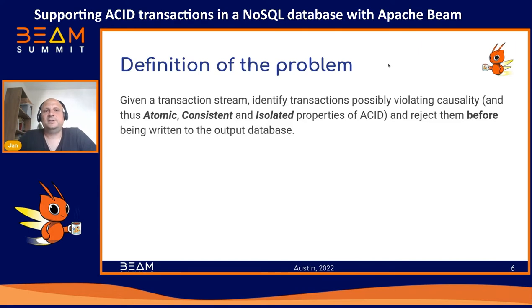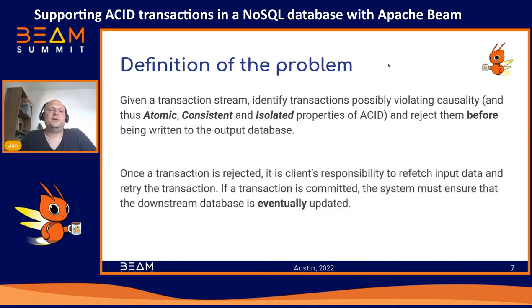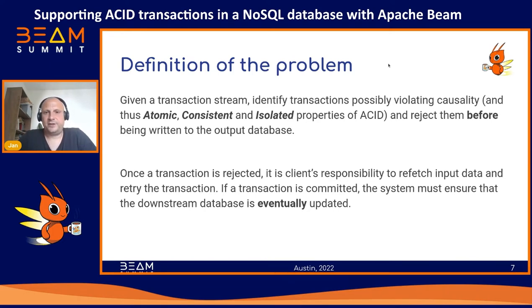So to rephrase that: given a transaction stream, identify transactions possibly violating causality and therefore ACID properties, and reject them before being written to the output database. We want to write a pipeline that will validate these properties. What we mean by transaction rejection is: we have a client that wants to write a transaction, and the Apache Beam pipeline tells the client that this transaction was rejected due to stale data read during the transaction. The client's responsibility is then to retry the transaction, refetch the inputs, and redo the logic. If the transaction is committed, the system must ensure the database is updated eventually, otherwise it would get into an inconsistent state.